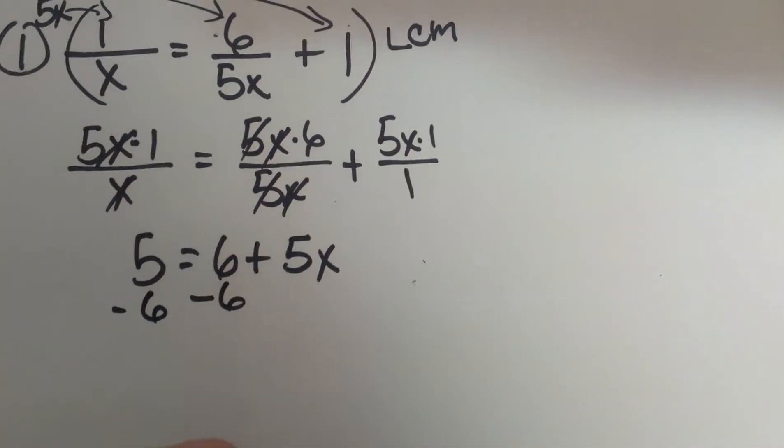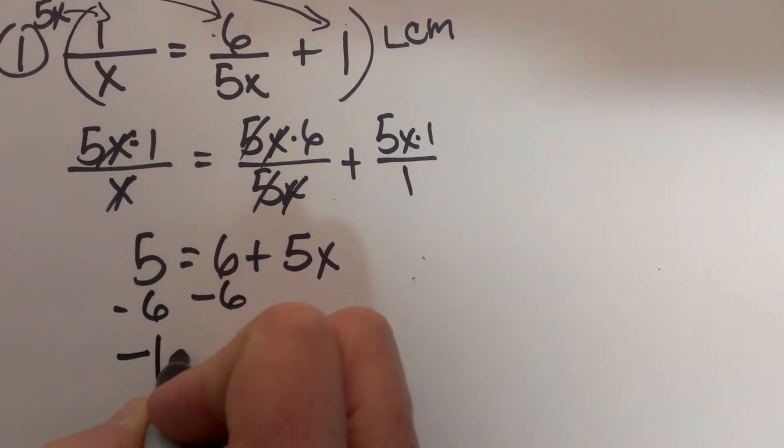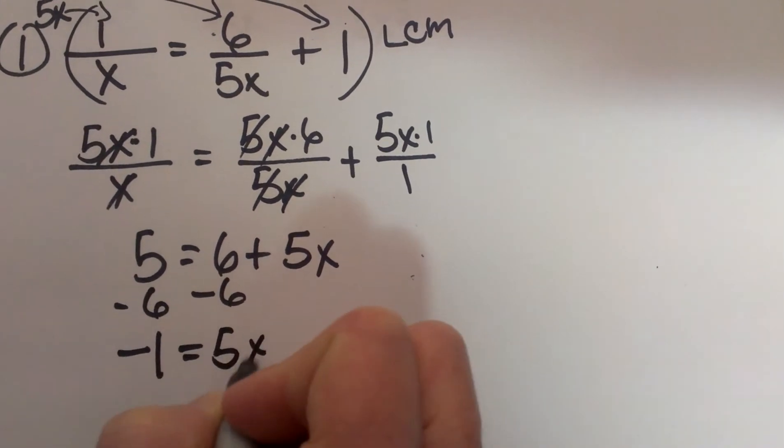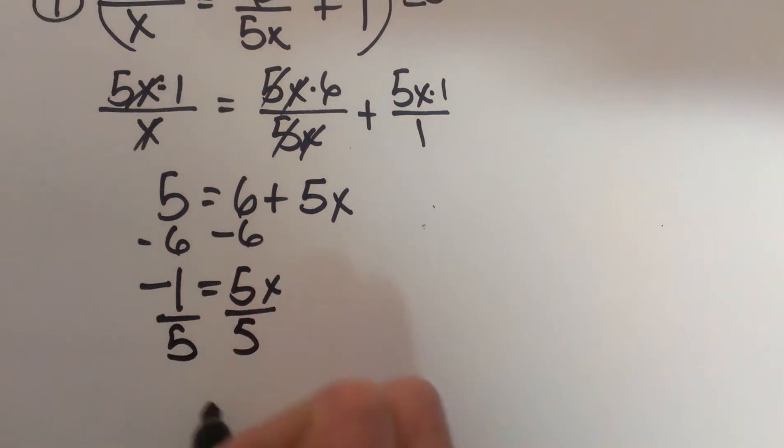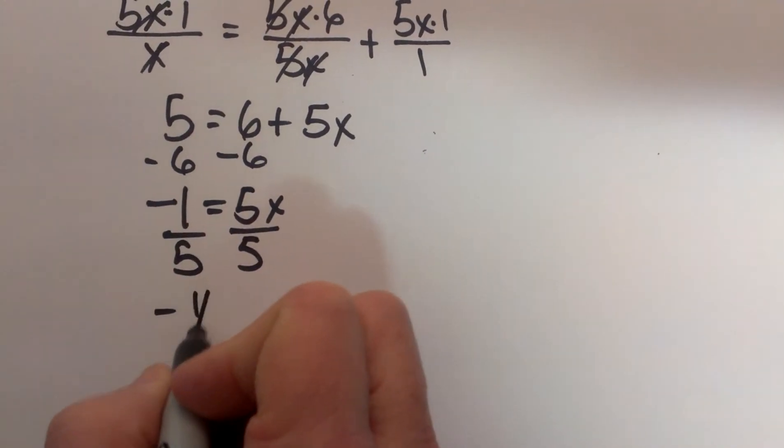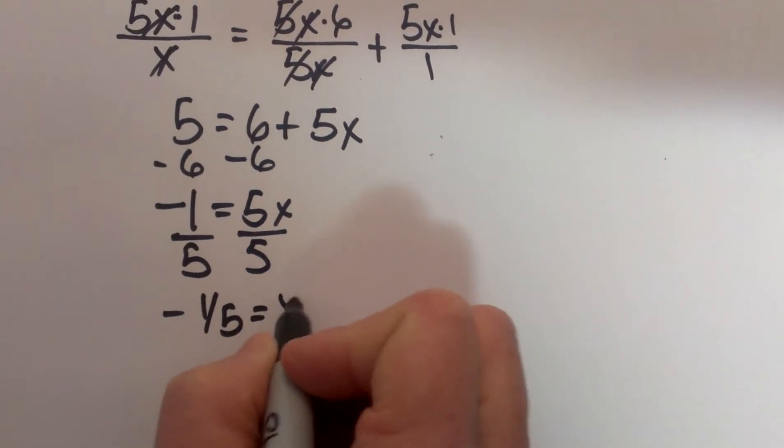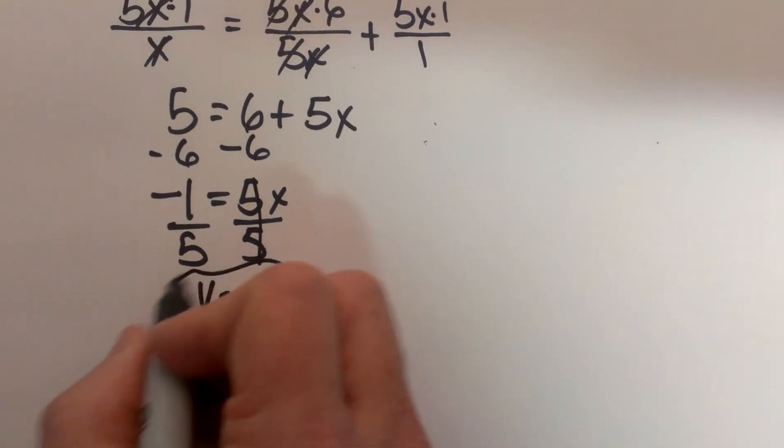I subtract 6 from both sides and I get negative 1 equals 5x, divide by 5 and don't be afraid of fractions it is ok. We get negative 1 fifth is equal to x. So there is the answer.